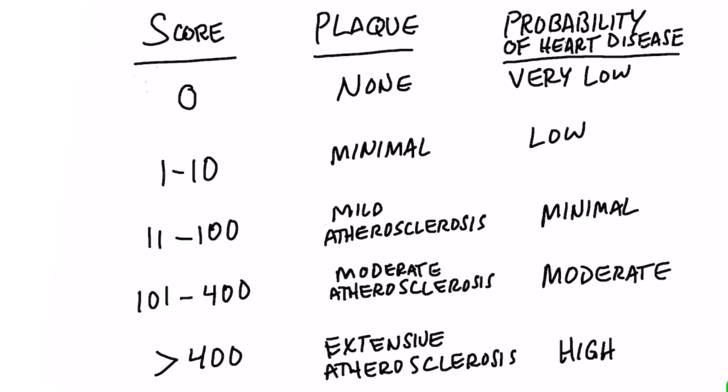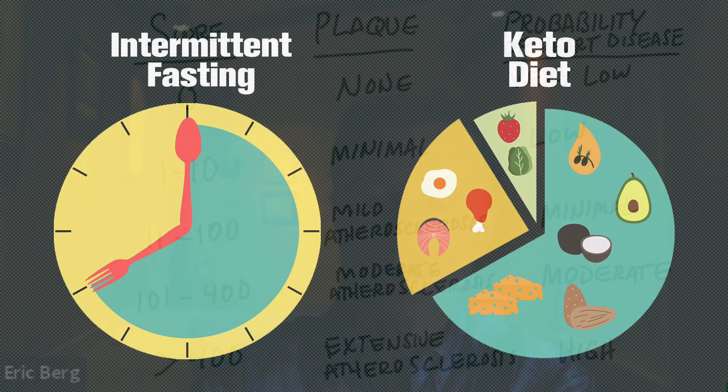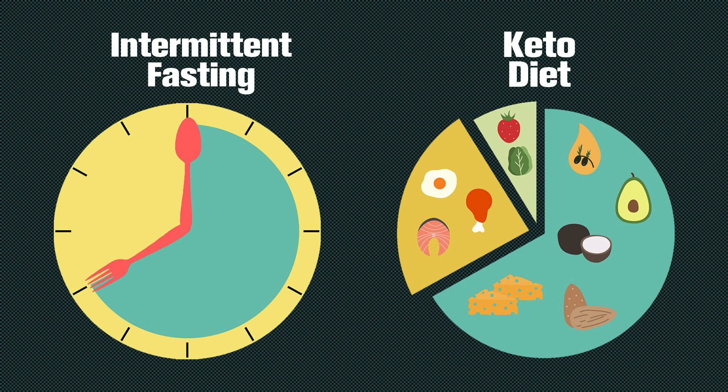I would recommend getting this test, find out where you are, and realize if it's high, you can do something about it. Go get retested maybe three months later. Here's what you need to do: you need to go low carb, and you need to do intermittent fasting and periodic prolonged fasting.